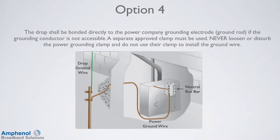In option number 4, if the grounding conductor or ground wire is not accessible, the drop can be bonded directly to the power company grounding electrode or ground rod. A separate approved clamp must be used. Never loosen or disturb the power grounding clamp, and do not use their clamp to install the ground wire to make room for yours.